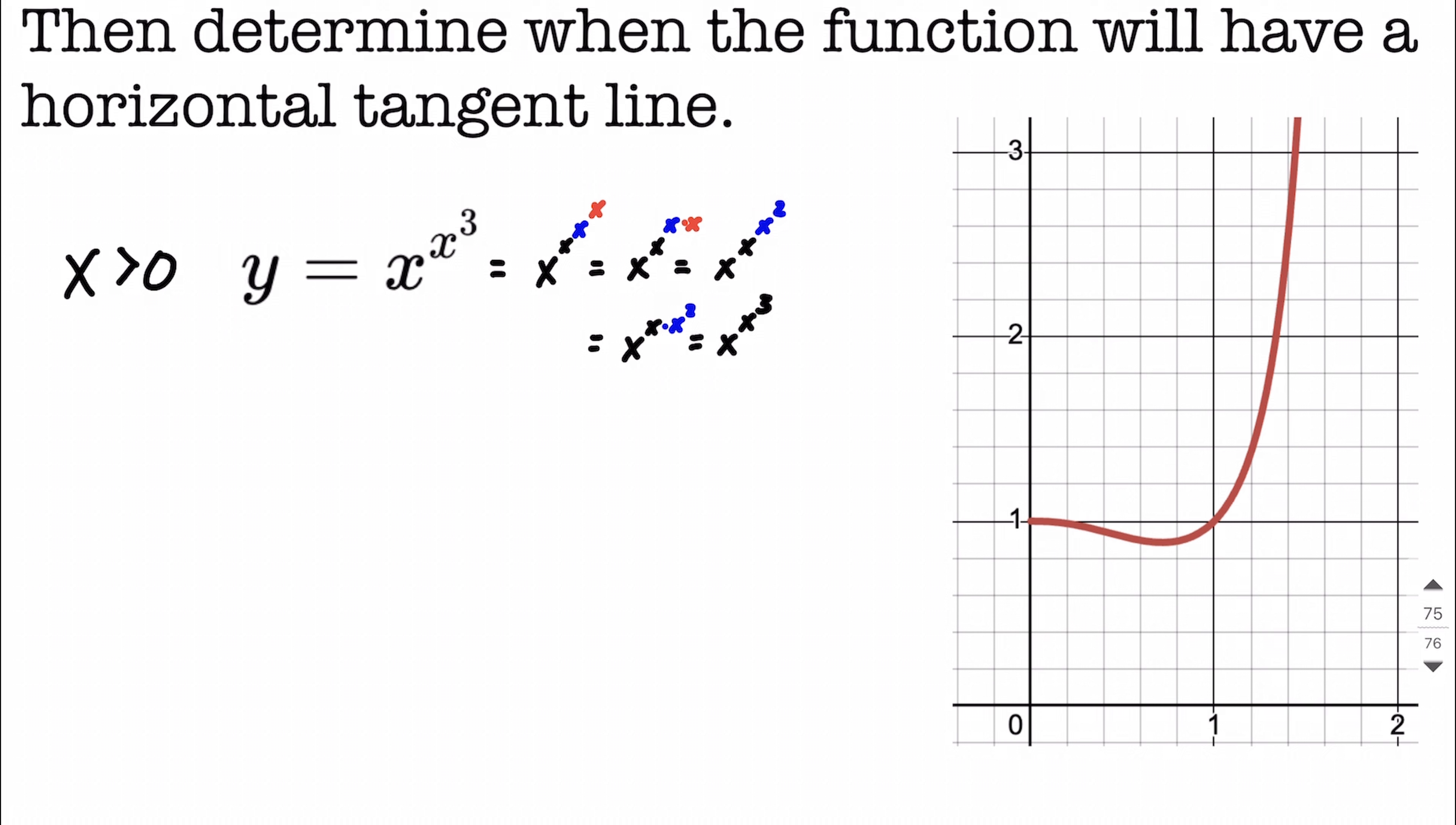The reason being this is an exponential function with our variable up in the exponent. So we don't want to plug in zero. We really don't want to plug in any negative values. And I've graphed the graph of y equals x raised to the x to the third power over on the right-hand side. So you can get a view of what that looks like.